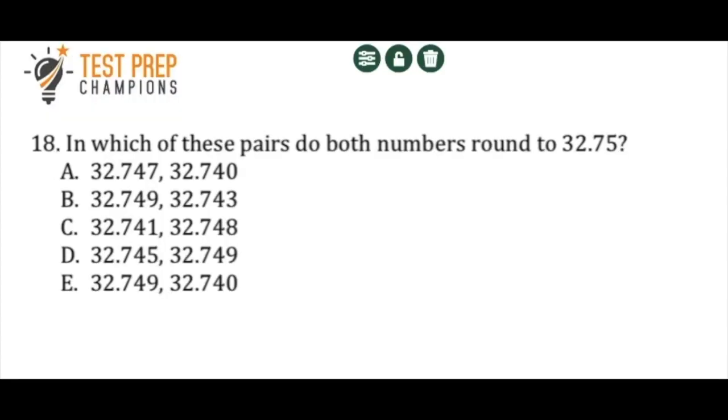Okay, so the next question says, in which of these pairs do both numbers round to 32.75? If you haven't reviewed rounding yet for the test, this is probably going to be pretty hard for you, but if you have, let's see how well you understand it. You can pause the video, try this out, and then we'll go over it.